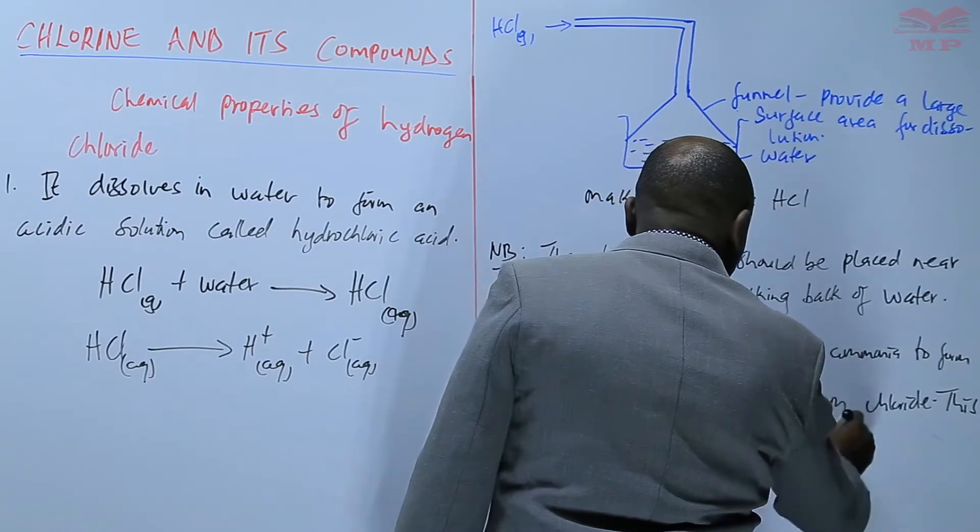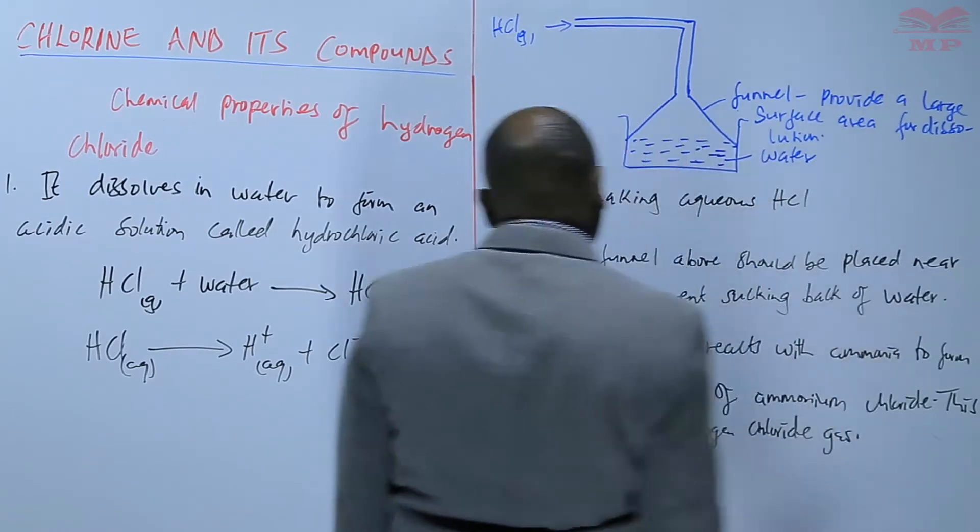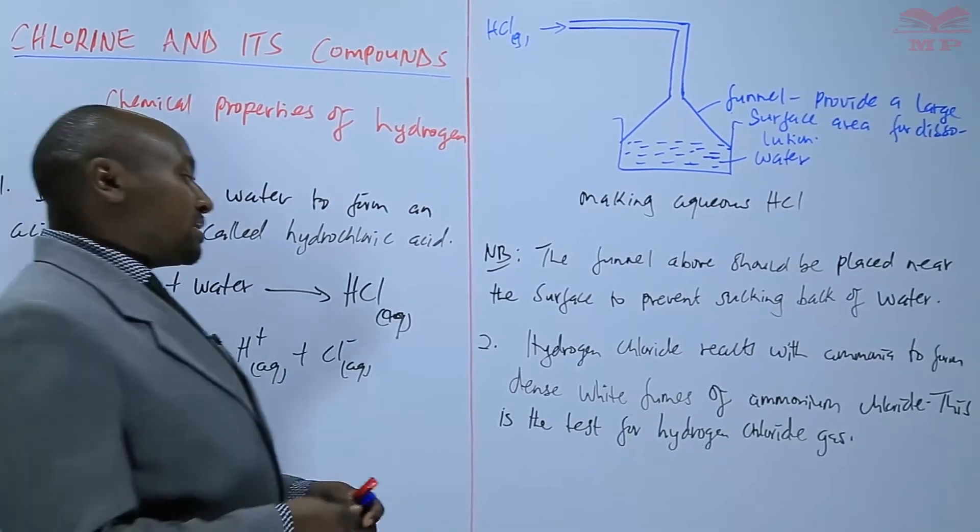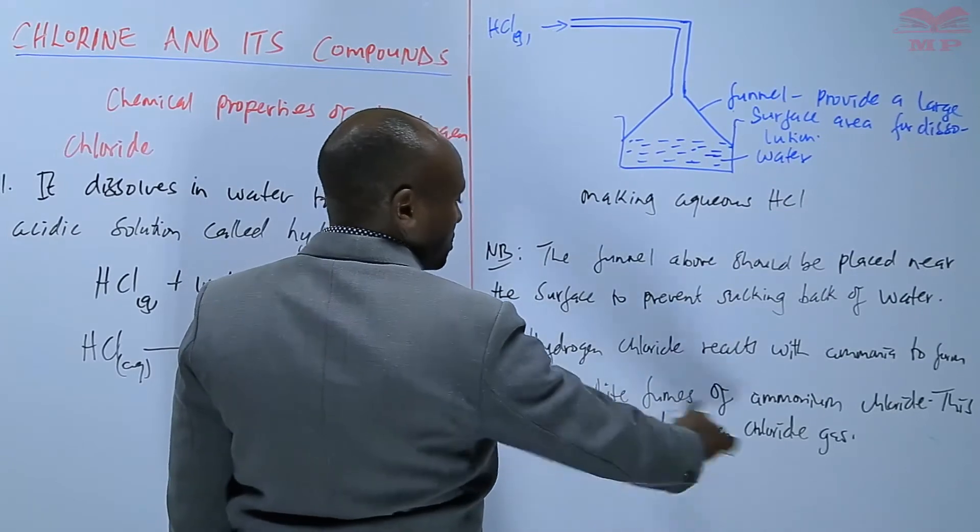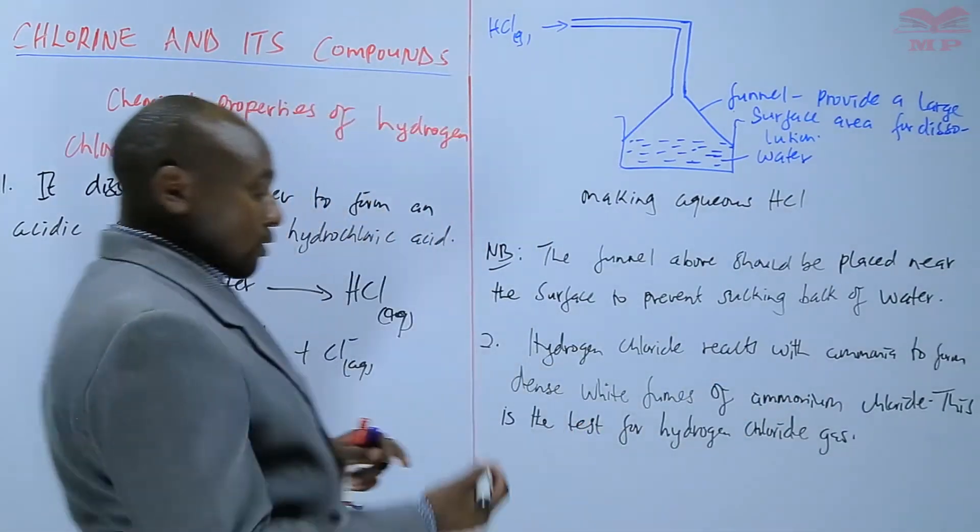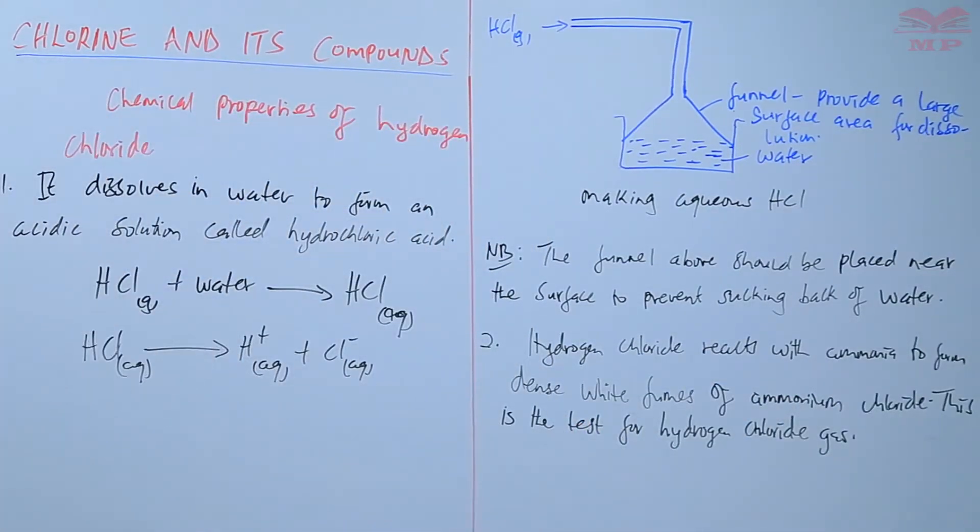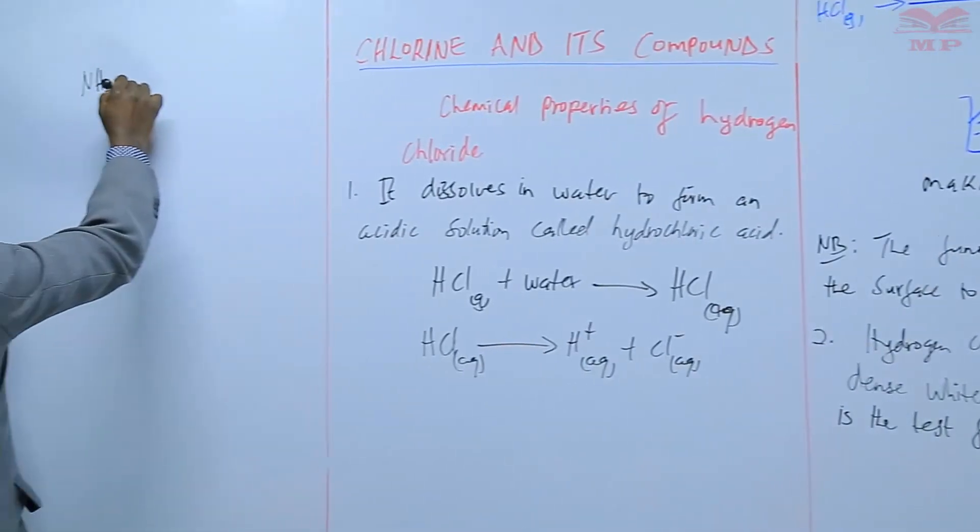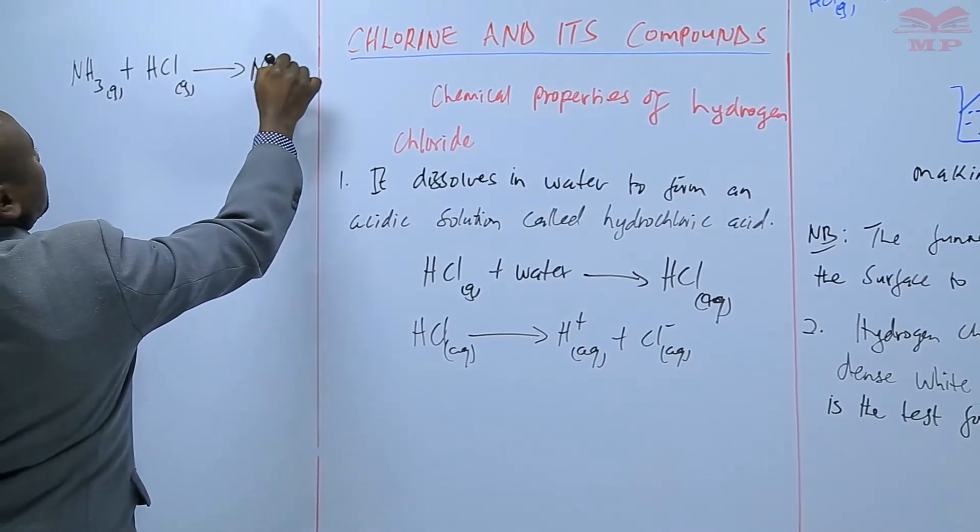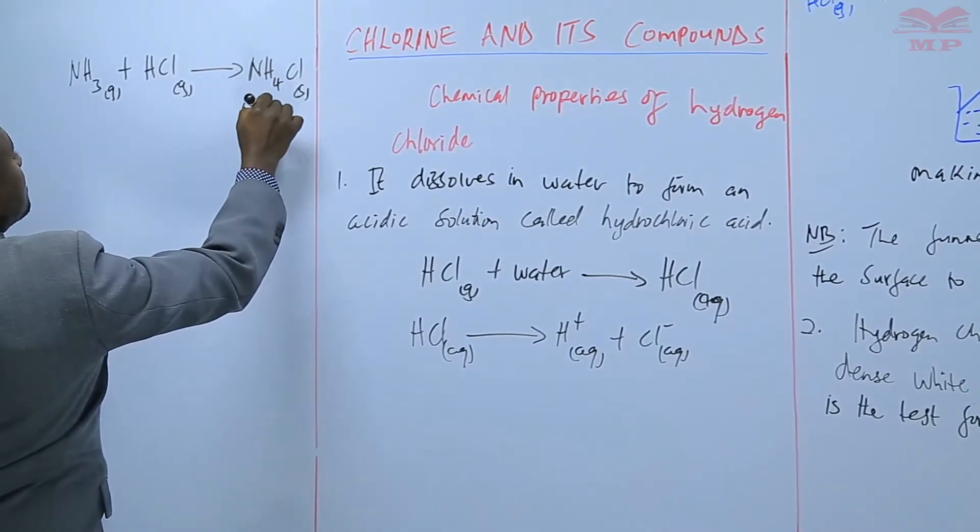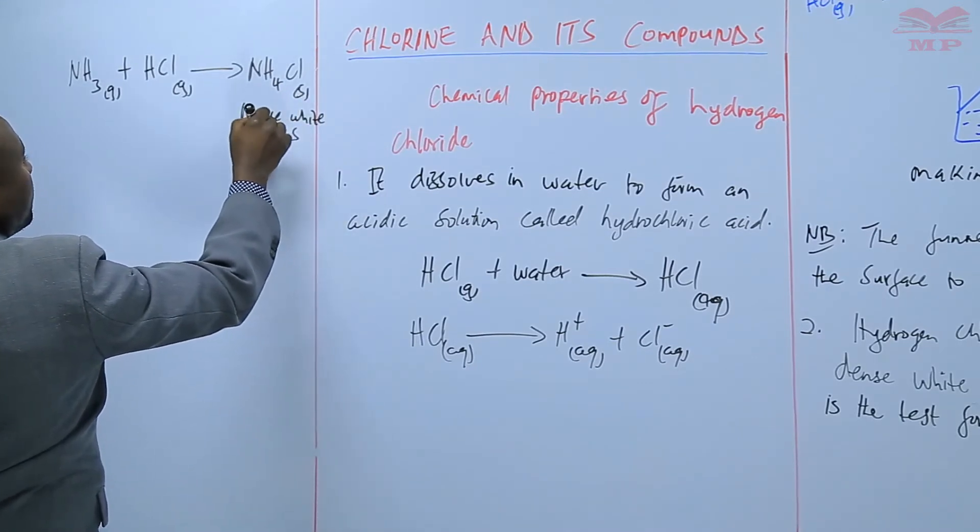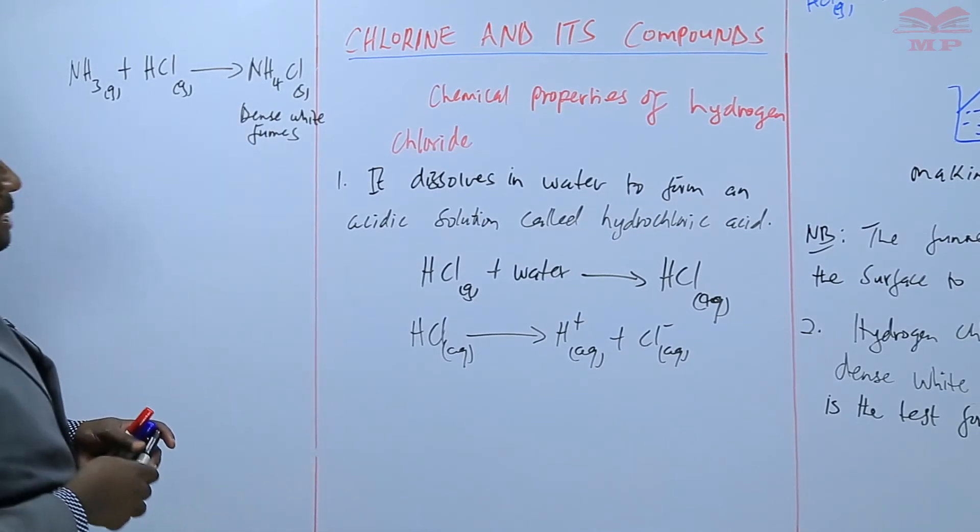So to test for hydrogen chloride gas you react the gas with ammonia and where the two gases meet they form some dense white fumes and those dense white fumes are as a result of the formation of ammonium chloride. So we have ammonia gas plus HCl gas, they form ammonium chloride, and this is what you are calling dense white fumes, very heavy fumes of ammonium chloride.